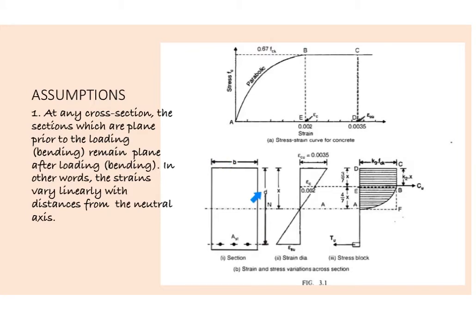This is b, the breadth of a beam. d is the effective depth of a beam. Ast is the area of steel and x is the depth of the neutral axis. This is the strain diagram.